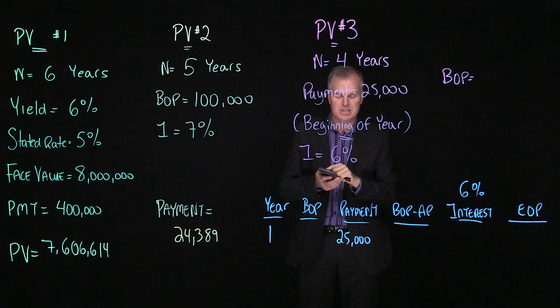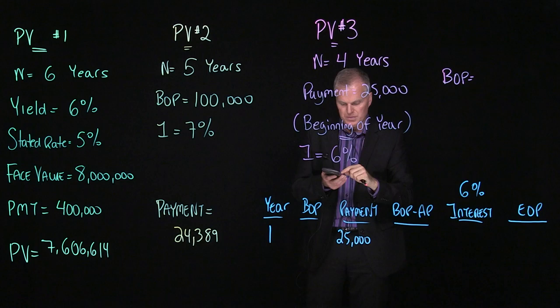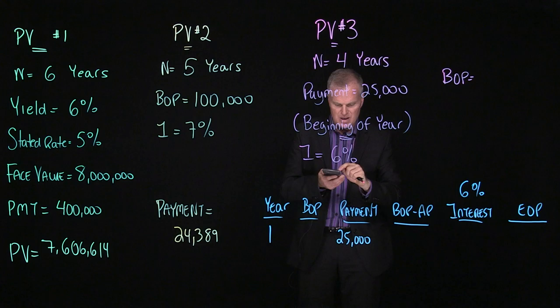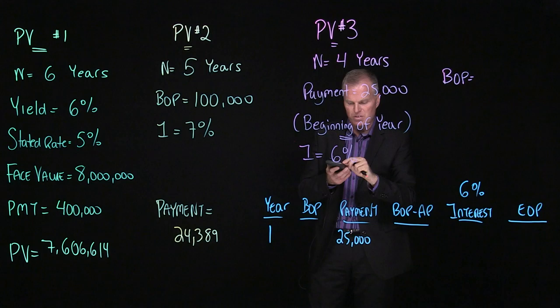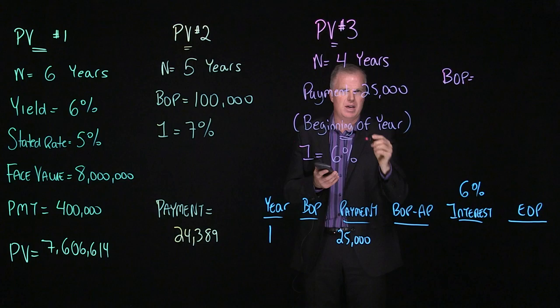So again, how do we do that? Hit second function, and then hit the payment button, which above it, in the yellow, says BGN. Then hit the second function again and hit set. And then what you'll notice, if you take a look right at the top of your decimals, is you'll have BGN set up there. And once you have that set up, you can then do this calculation.